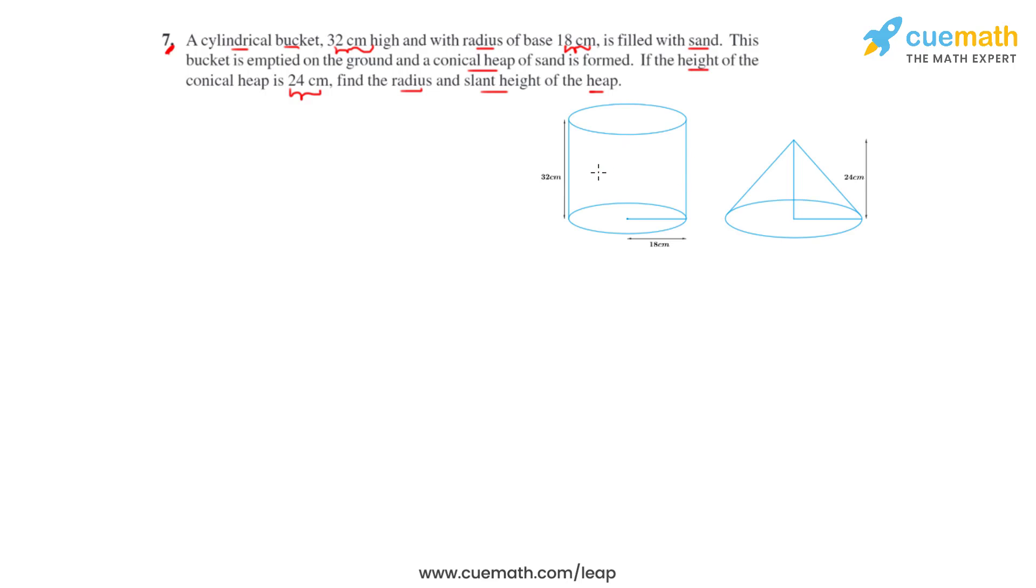Here we have a bucket which has got a radius r1 equals 18 centimeters and a height h1 which equals 32 centimeters.